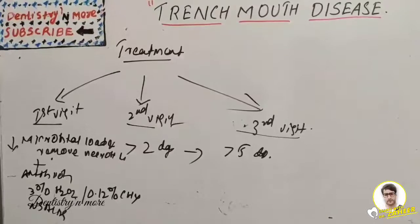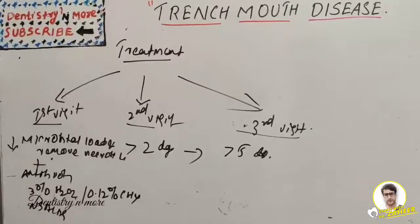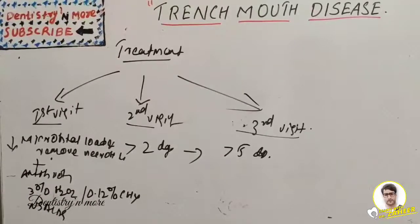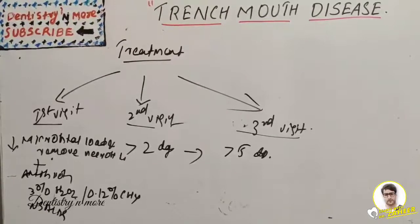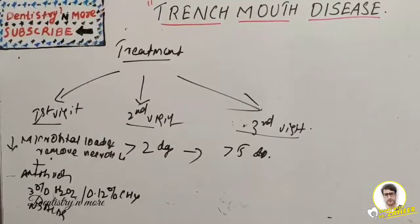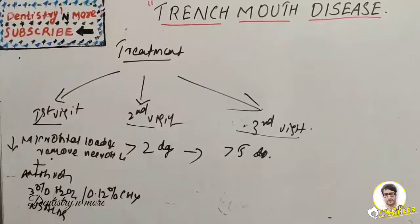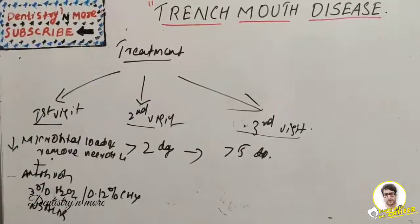The gingiva can be contoured using surgical methods such as plastic surgery or other techniques. Recovery typically takes about one month, though it depends on many factors including the patient's systemic health, local factors, habits, diet, and plaque management. That covers all about trench mouth disease, which is commonly asked as a short note in oral pathology.